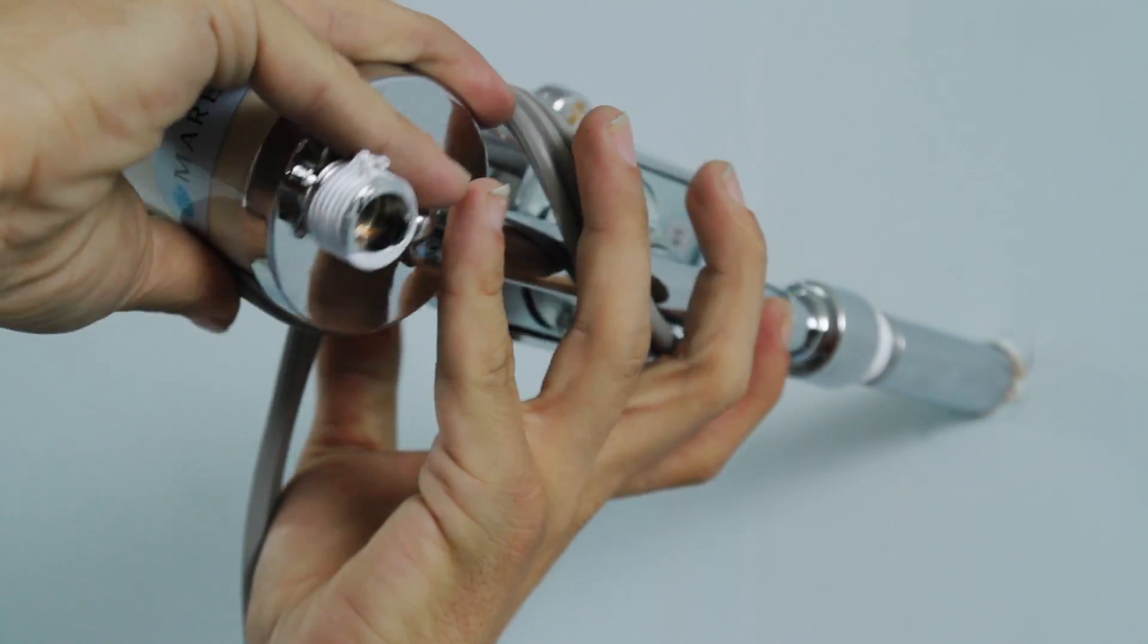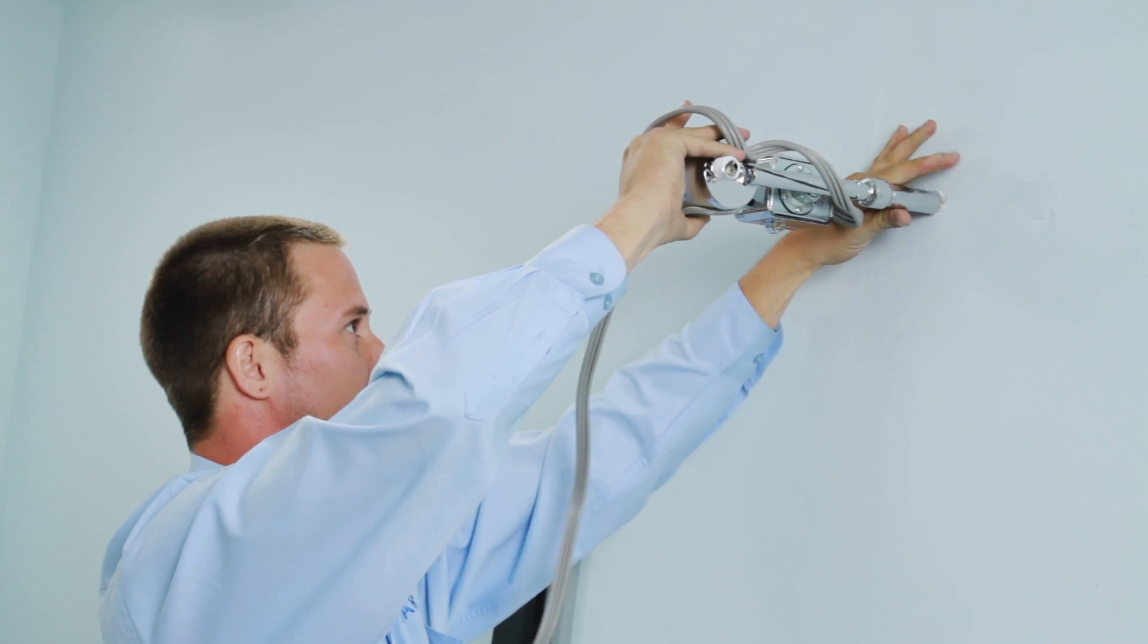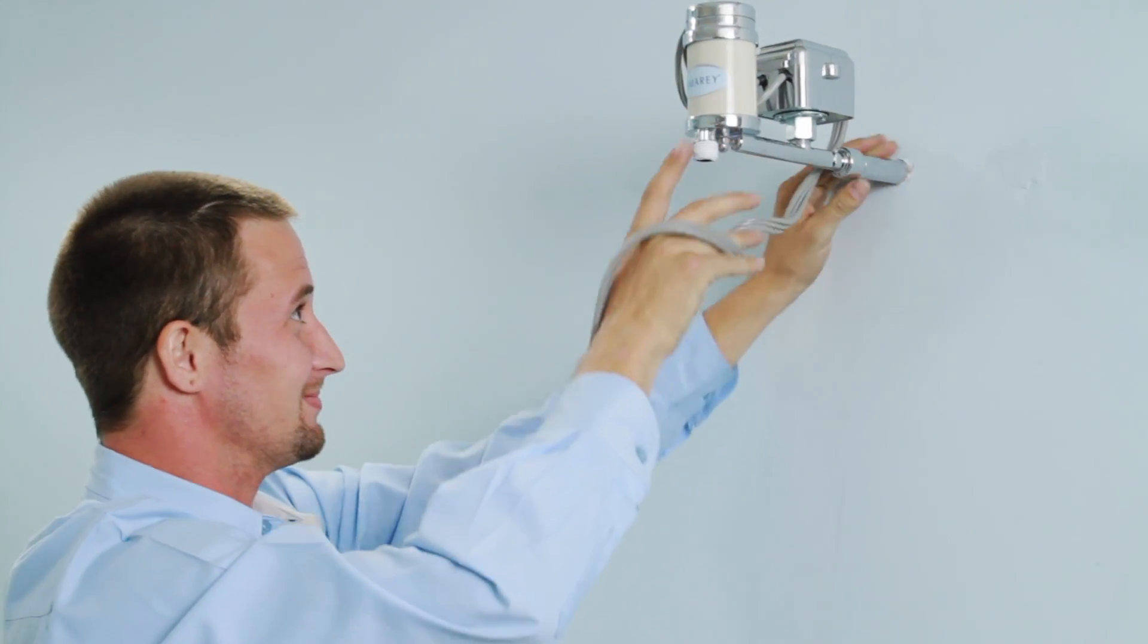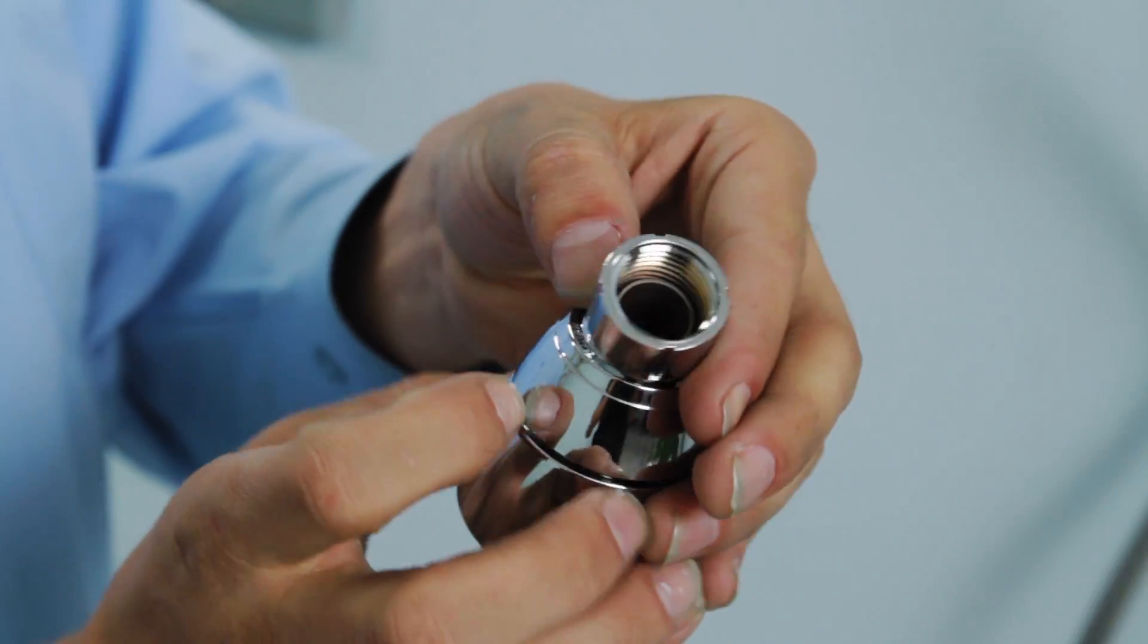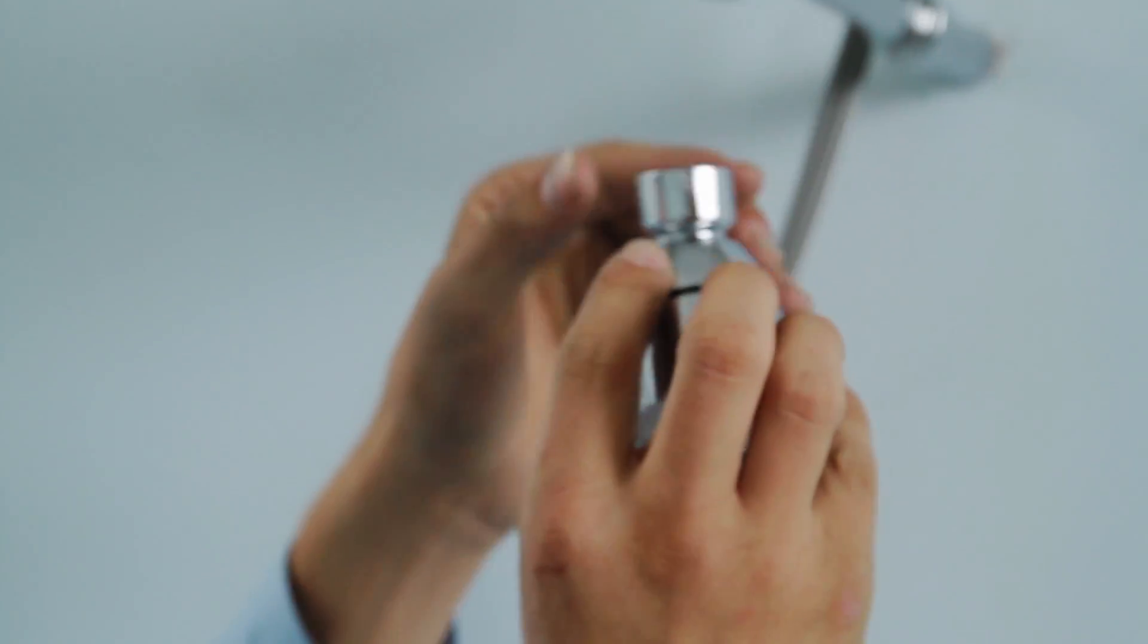Do not plug in your water heater yet. First, turn on the water. Check for water leaks and correct as necessary. Allow the water to run for at least 10 seconds to clear any debris from the line, and then turn off.